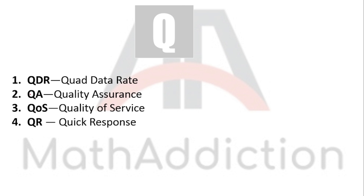First, QDR is Quad Data Rate. QA is Quality Assurance. QOS is Quality of Service. QR is QR code — Quick Response.